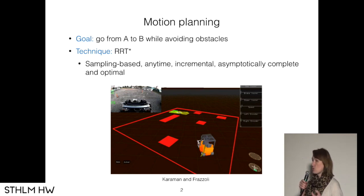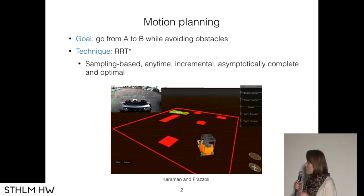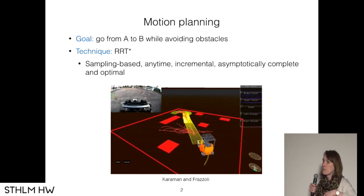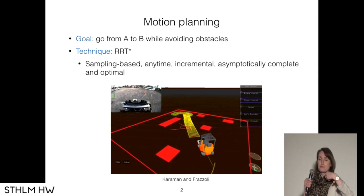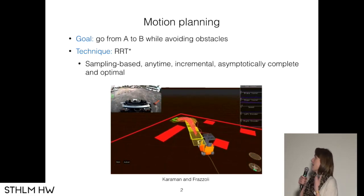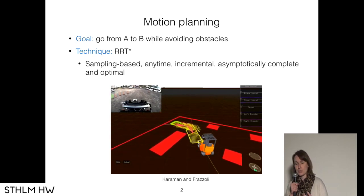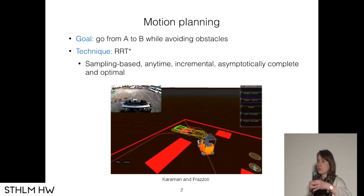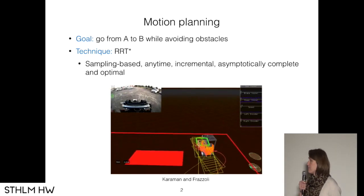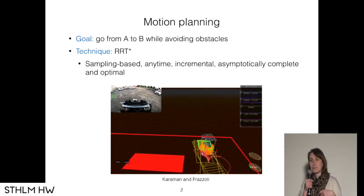The technique that we chose to go with is RRT*. It's a sampling-based technique — you throw a bunch of samples in the space and try to connect them. It has a bunch of interesting properties: it's anytime incremental, asymptotically complete and optimal. So you can keep improving your path as you go, it can compute in real time, and the more it computes, the better it gets.